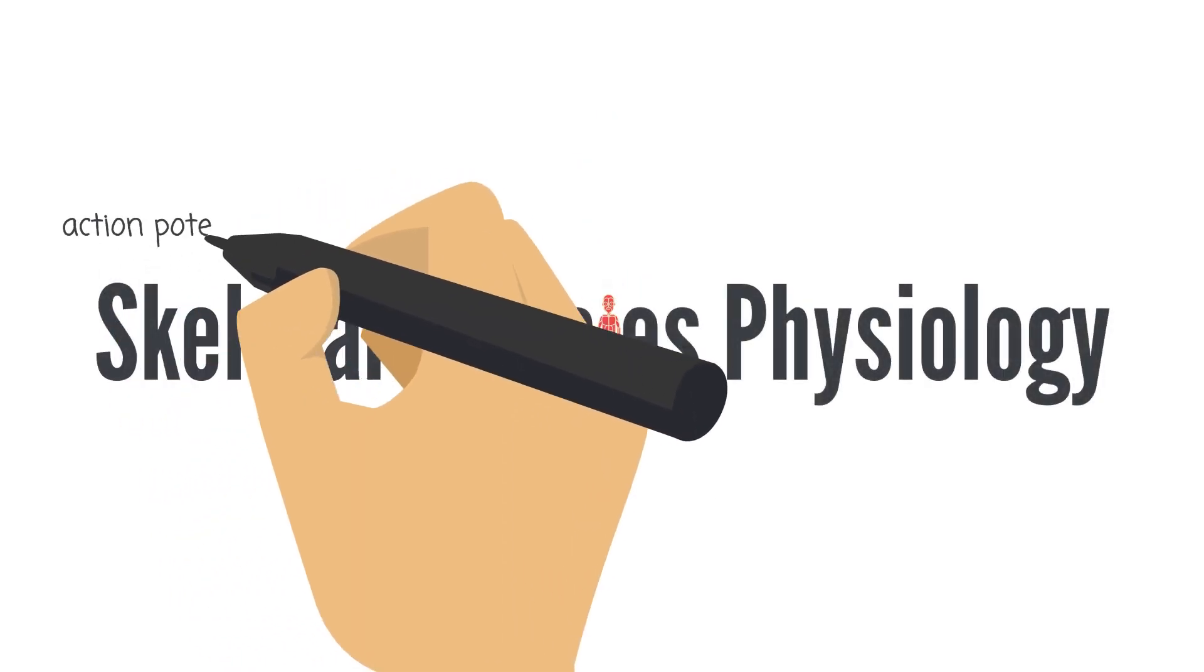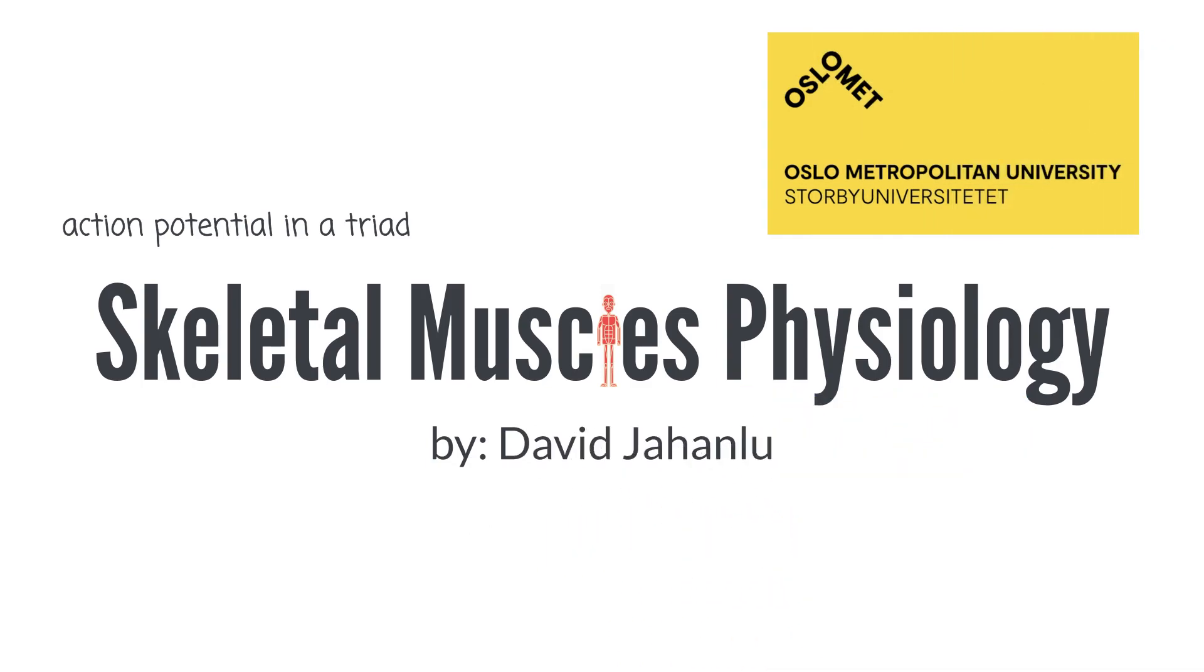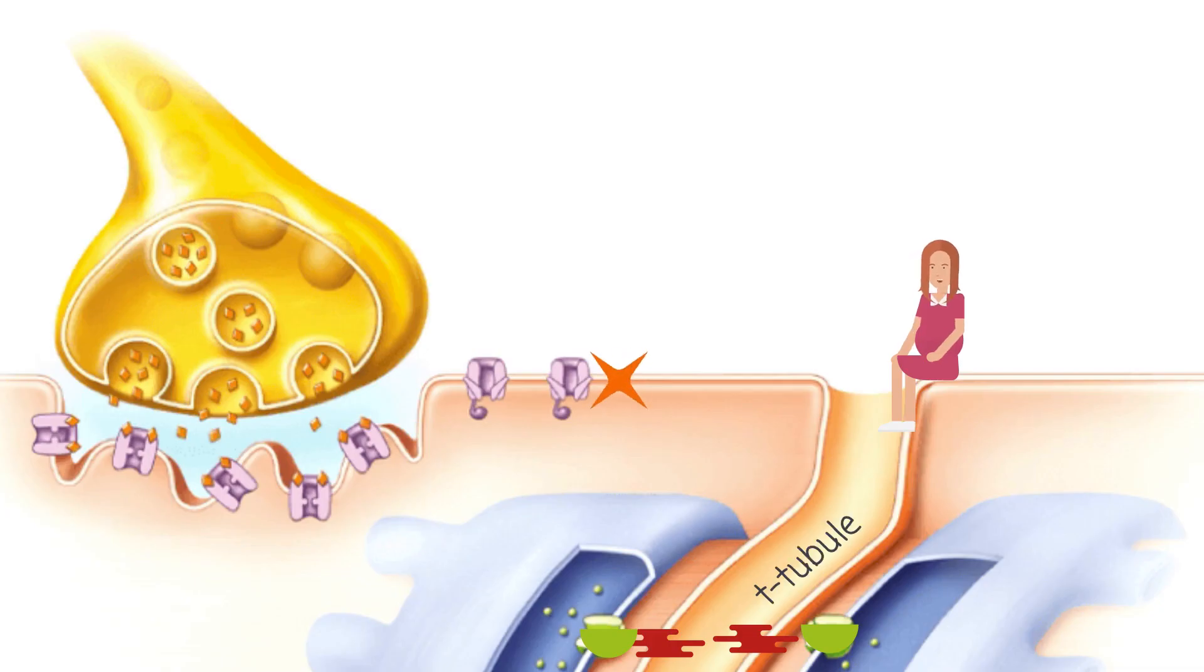In this lecture, we look at the effect of action potential in a triad. So we said that T-tubule and two adjacent terminal cisterna are known as triad.